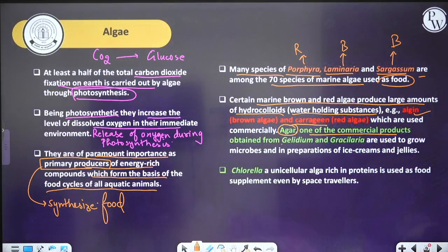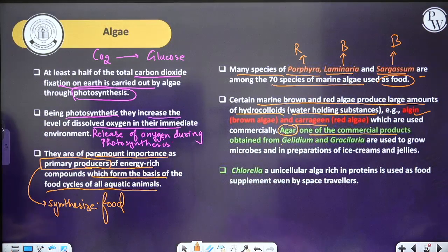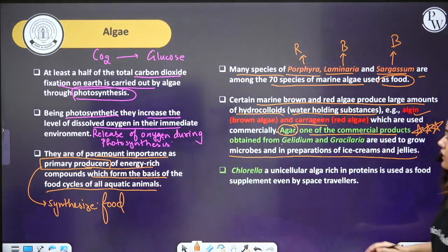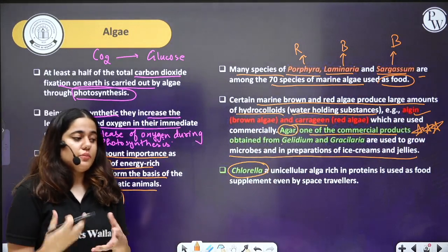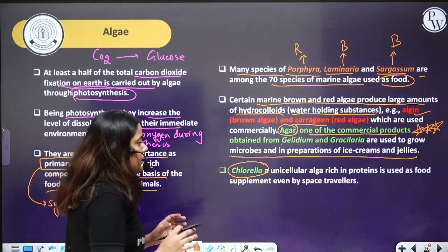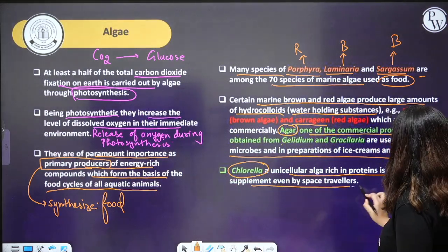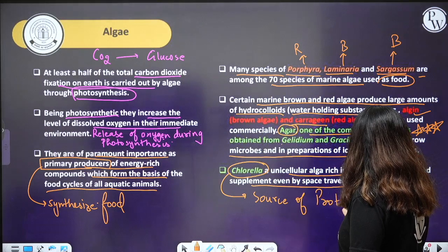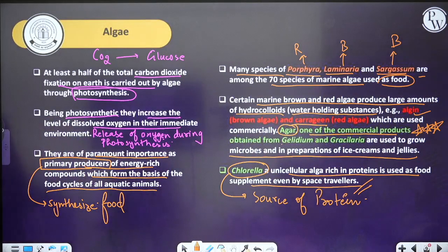Agar is one of the commercial products obtained from Gelidium and Gracilaria, and it is used in the preparation of ice cream, jellies, and also to grow microbes in laboratories. This is a very important point. Chlorella is a unicellular algae rich in protein and used as a food supplement even by space travellers. It is a source of protein — Chlorella is grown at a very large scale, protein is extracted from it, and used as food.